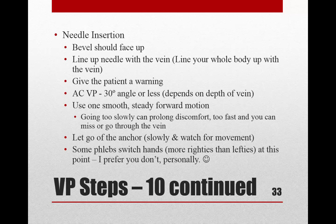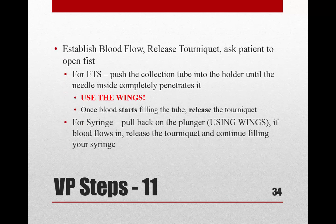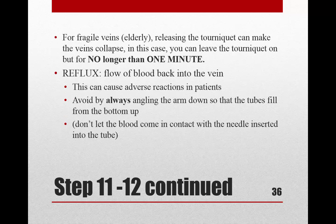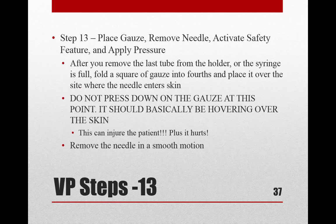Once the needle is in, slowly let go of your anchor and put your tube on. If blood starts flowing well, release the tourniquet and ask the patient to relax their fist. If using a syringe, pull back on the plunger at this point. Once you have good blood flow, release the tourniquet and continue, allowing all tubes to fill. Invert your tubes as you remove them, then put the next tube on. If you left the tourniquet on, make sure to remove it before removing the needle and before one minute is up.